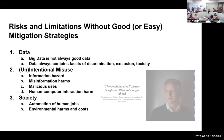The first risk is data — big data is not always good data. Data can contain facets of discrimination, exclusion, toxicity, and other harmful things, and what is the solution to this is not very clear. The second problem is intentional or unintentional misuse: information hazards, misinformation harms, malicious users, and human-computer interaction harm. The third kind is society damages — automation of human jobs and environmental harms and costs.